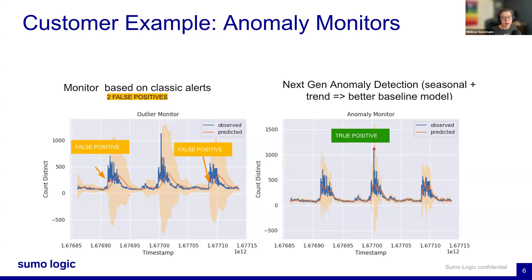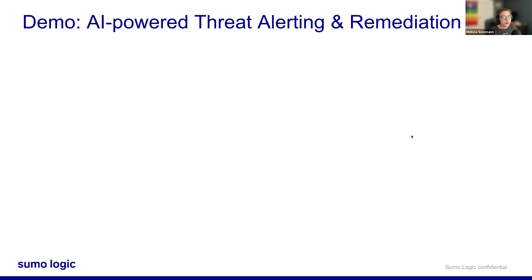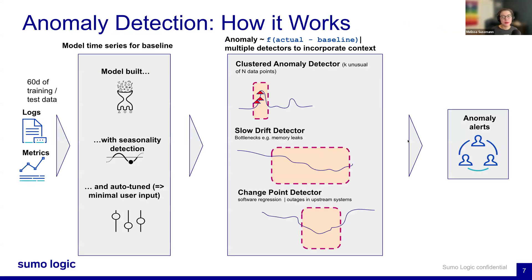Once an anomaly is detected, our system generates an alert. That alert response page provides a summary and links to the automated playbooks. First, we do data collection — we collect extensive telemetry data, including the MELT data: logs, metrics, traces, and events. That data forms the basis for detecting your anomalies.